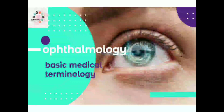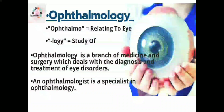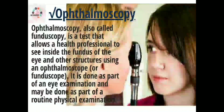Hello everyone, today we are going to learn about basic medical terminology of ophthalmology, as it is most important to understand regarding eye disorders. So let's begin. Before we start, we must know what ophthalmology is. 'Ophthalmo' means relating to the eye, and 'logi' means study of — so ophthalmology means the study of the eye. It is a branch of medicine and surgery which deals with the diagnosis and treatment of eye disorders, and the specialist in ophthalmology is called an ophthalmologist.